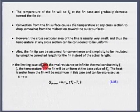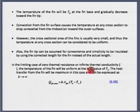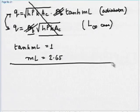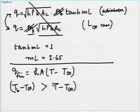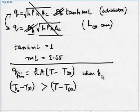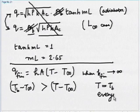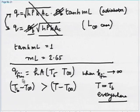In the limiting case of zero thermal resistance or infinite thermal conductivity, the temperature of the fin will be uniform and equal to T_B. So when K tends to infinity, T equals T_B everywhere. Therefore, Q_fin_max — the best possible situation — is H·A·(T_B − T∞). We will never achieve this in practice, since even copper with 400 W/m·K thermal conductivity shows a temperature drop.